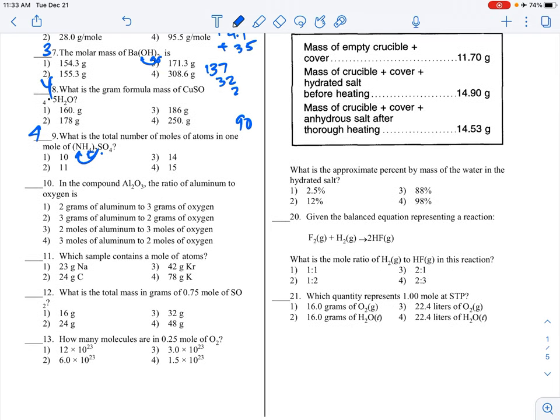In the compound Al2O3, what is the ratio of aluminum to oxygen? Remember these are molar ratios. Mole ratios is what we do when finding empirical formulas. So 2 moles of aluminum to 3 moles of oxygen, choice 3.